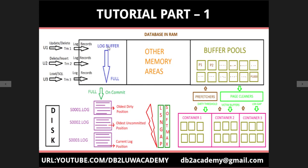As transactions run, the transaction log records are generated, flushed into the transactional log files on disk, and there is a current log position. There are also other memory areas in the database: lock list, db heap, monitor heap at the instance level, sort heap, shared sort heap, package cache, catalog cache, backup buffer, restore buffer, utility heap, and many more. But the most significant memory area I want to discuss is the buffer pools.